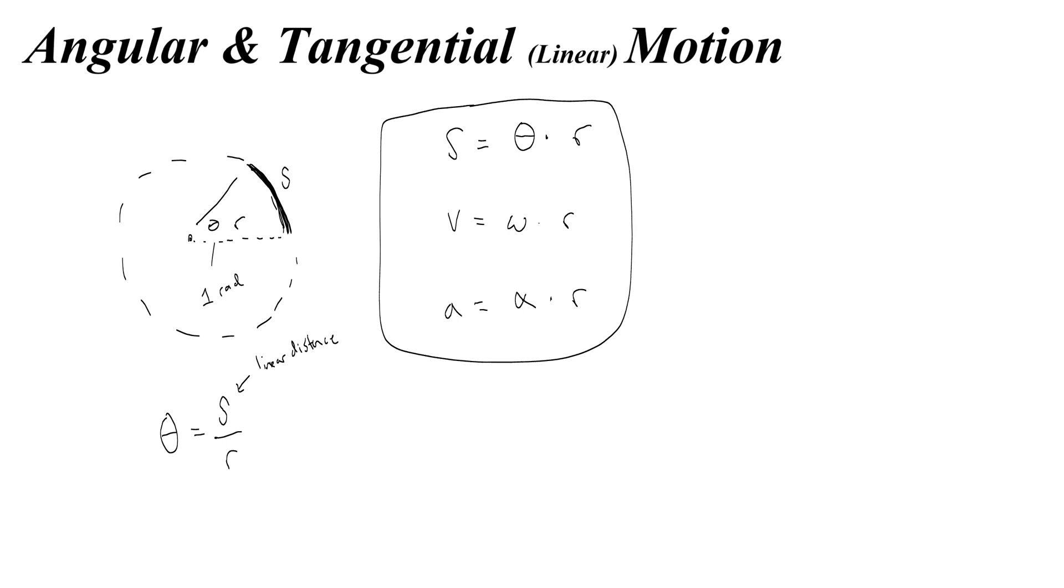This becomes an incredibly important key, or like legend, that you can use to translate angular and linear motion into one another. Let's do two examples.